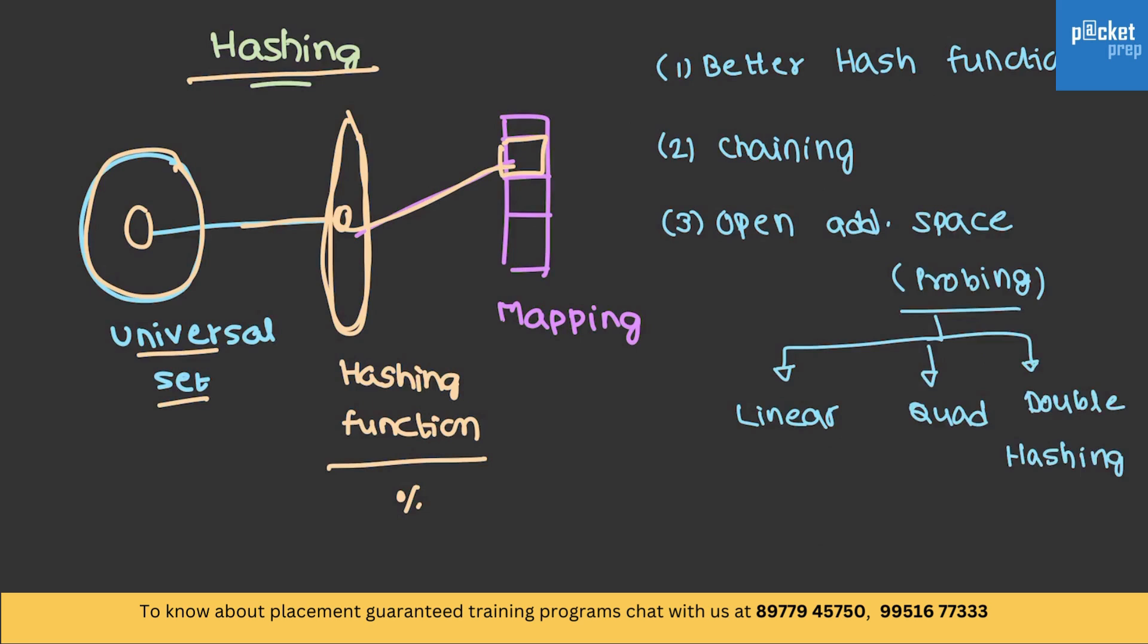Let's try to understand each and every one of them. Better hash function. Previously, we have seen modulus as a hash function. Instead of that, if we are trying to have a number, let's say, if you are having a number x, then x square mod length. Or, x square plus x power 5 mod length. In the similar way, you can define hash function so that number of collisions are reduced.